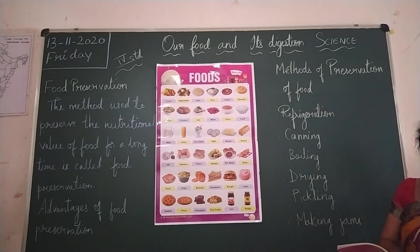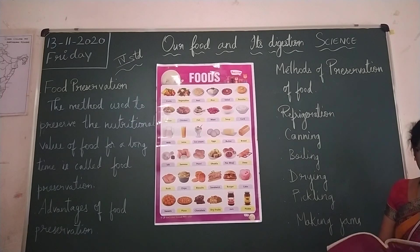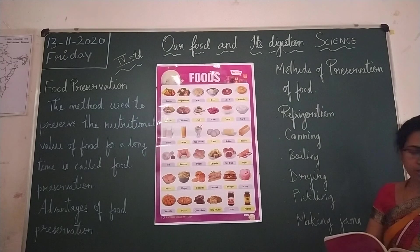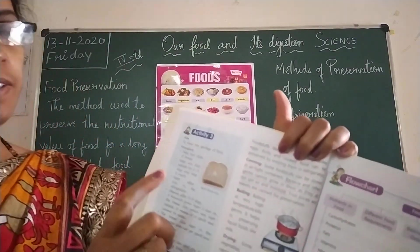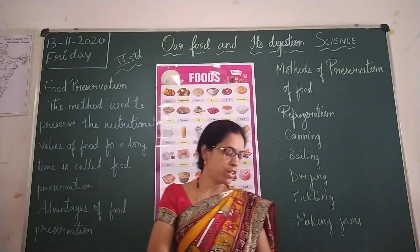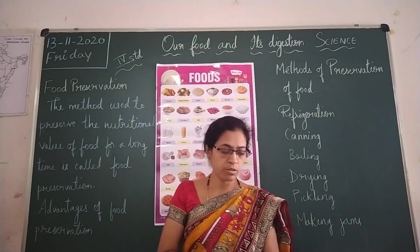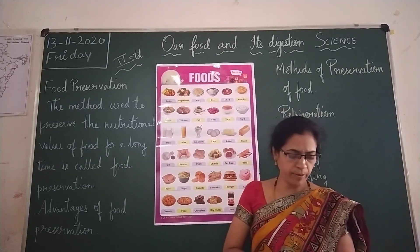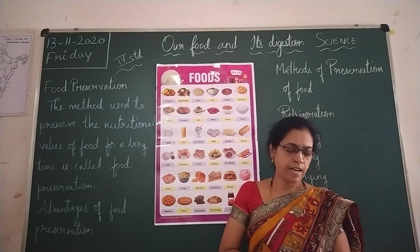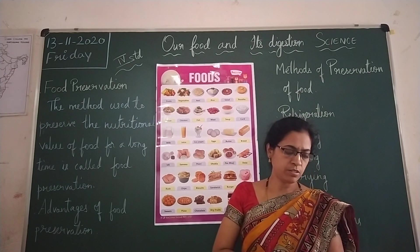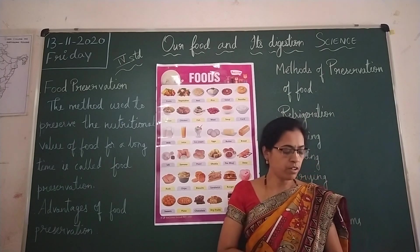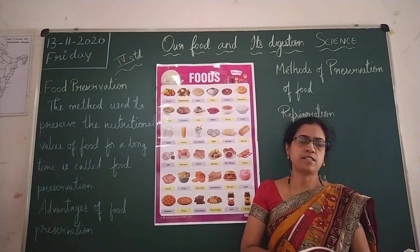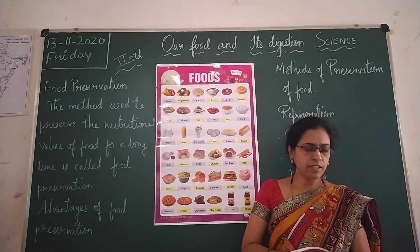Now let me explain Activity 3, which you can do at home. Take 2 slices of bread. Keep one slice outside for 2 to 3 days and keep it moist. Keep the other slice in the refrigerator.